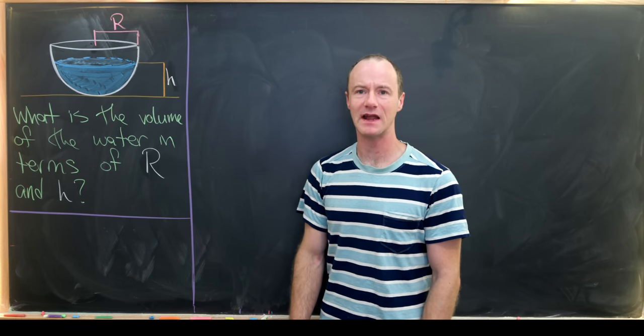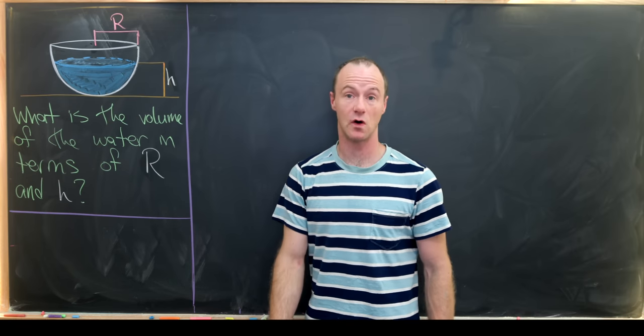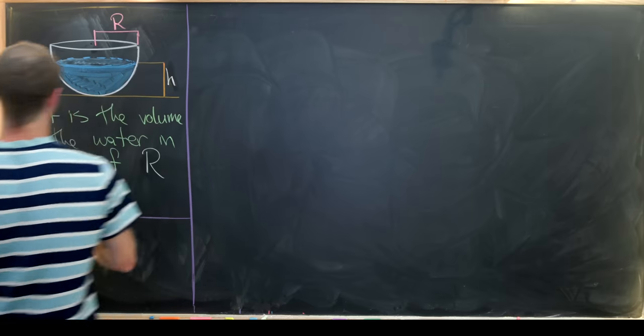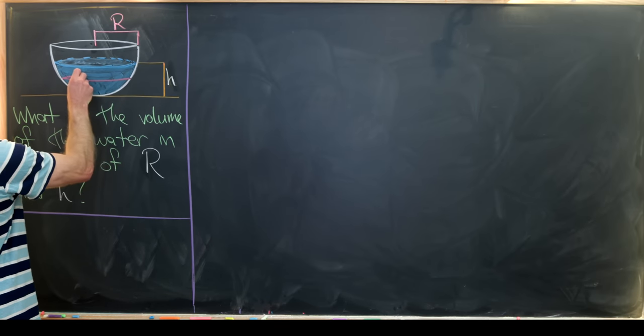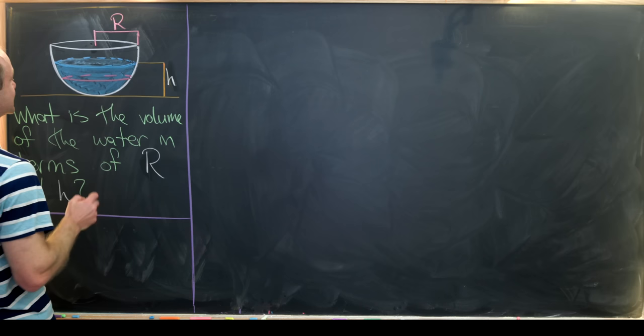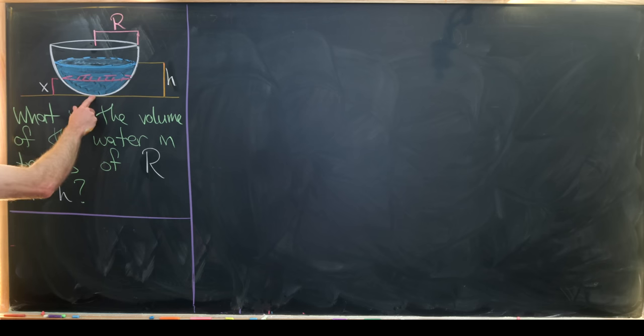So maybe how might we do this? Keeping in mind that we're going to use calculus, we can calculate this volume by finding the area of some sort of slice of this picture. Let's say there's a slice of this picture at height x, and then integrating the area of this slice from x equals zero all the way to x equals h.